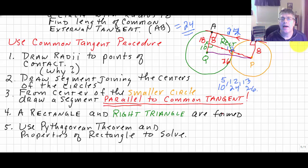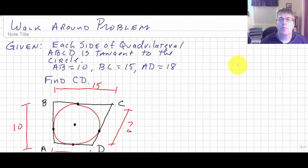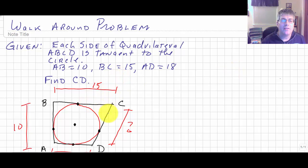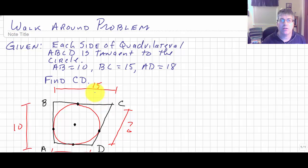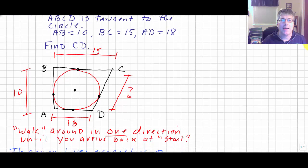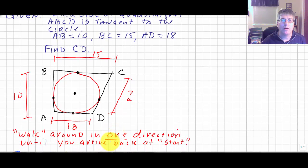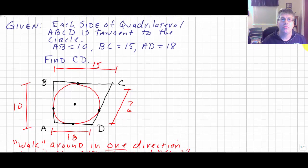Next up, we'll look at a walk-around problem. The reason we call it a walk-around problem is because you're going to start on one side and walk your way all the way around the problem in one direction until you get back to the start. You can walk clockwise or counterclockwise — it doesn't matter. But it's important that you walk in the same direction and don't backtrack, as you'll find things a little bit easier.